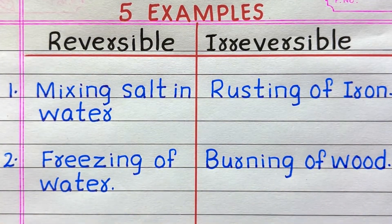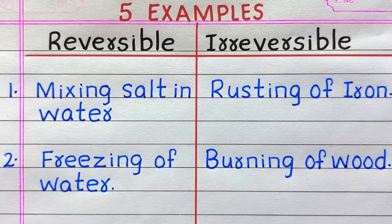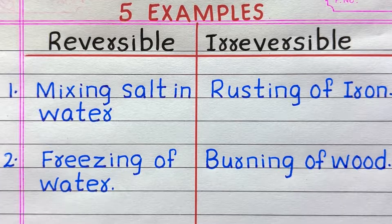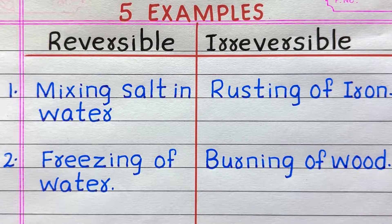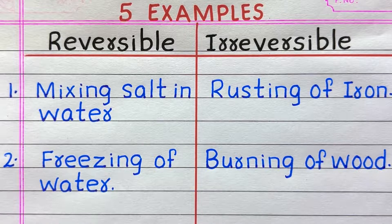First example of a reversible change is mixing salt in water. Second, freezing of water. First example of an irreversible change is rusting of iron.